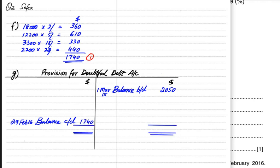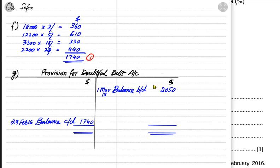The entry we need to make: the provision at the start of the year was 2,050, and at the end of the year it has decreased to 1,740. We need to take the difference between the two and that difference would be transferred to the income statement. The shorter side here is the debit side — whichever is the shorter side, we need to transfer it to the income statement.